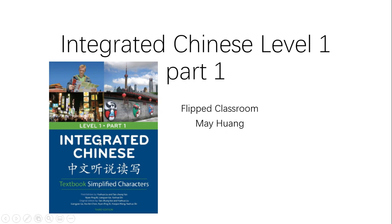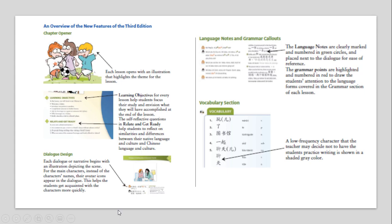This is the textbook we are using in this flipped classroom. It is Integrated Chinese Level 1 Part 1, simplified characters, third edition. Let's give an overview of the features of the textbook. Usually this textbook is organized this way: first it comes with a chapter opener, a picture, and then it mentions learning objectives and related content.